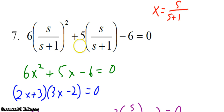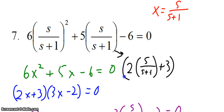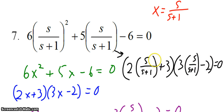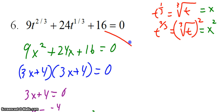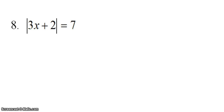One thing I want to point out: you do not have to show the substitution if you don't want to. If you were comfortable, you could have just factored this right away into two times s over s plus one plus three, and three times s over s plus one minus two. The substitution is more of a thought process — you want to recognize this is what we call of quadratic form. Although it is technically not a quadratic equation, it can factor like a quadratic equation does. Similarly, you could have just factored the other one right away. The substitution makes it a little cleaner and easier to see how to factor.